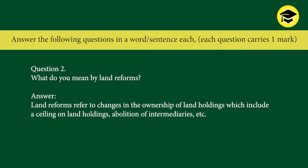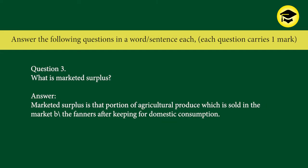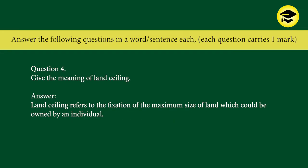Question 2: What do you mean by land reforms? Answer: Land reforms refer to changes in the ownership of land holdings, which include a ceiling on land holdings, abolition of intermediaries, etc. Question 3: What is marketed surplus? Answer: Marketed surplus is that portion of agricultural produce which is sold in the market by farmers after keeping some for domestic consumption.